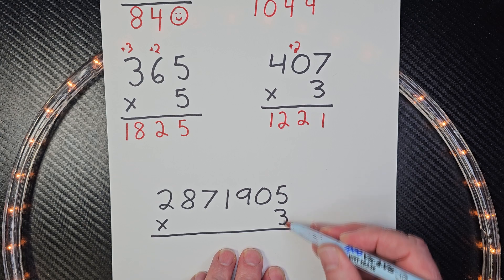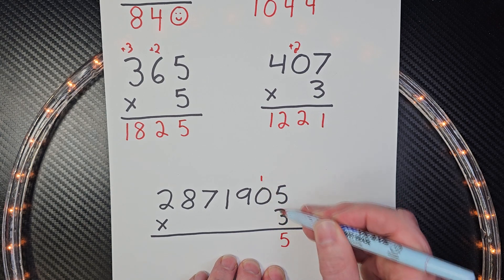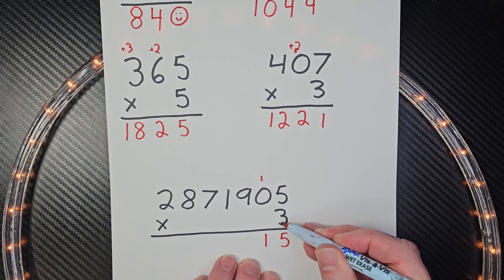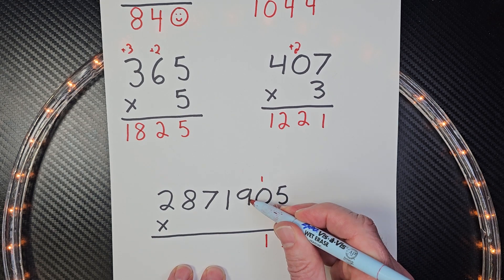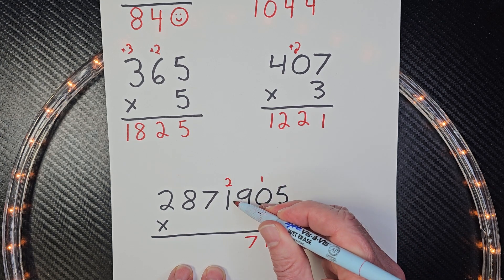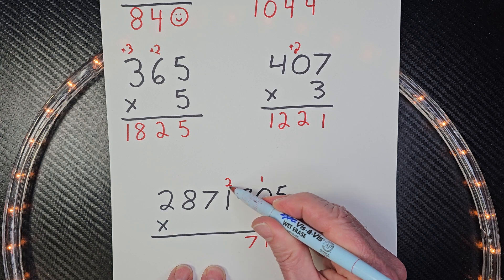Five times three is 15. Put the one up there. Three times zero is zero. Plus the one. Just drop that one down. Three times nine is 27. Put the two up here. Three times one is three, four, five.